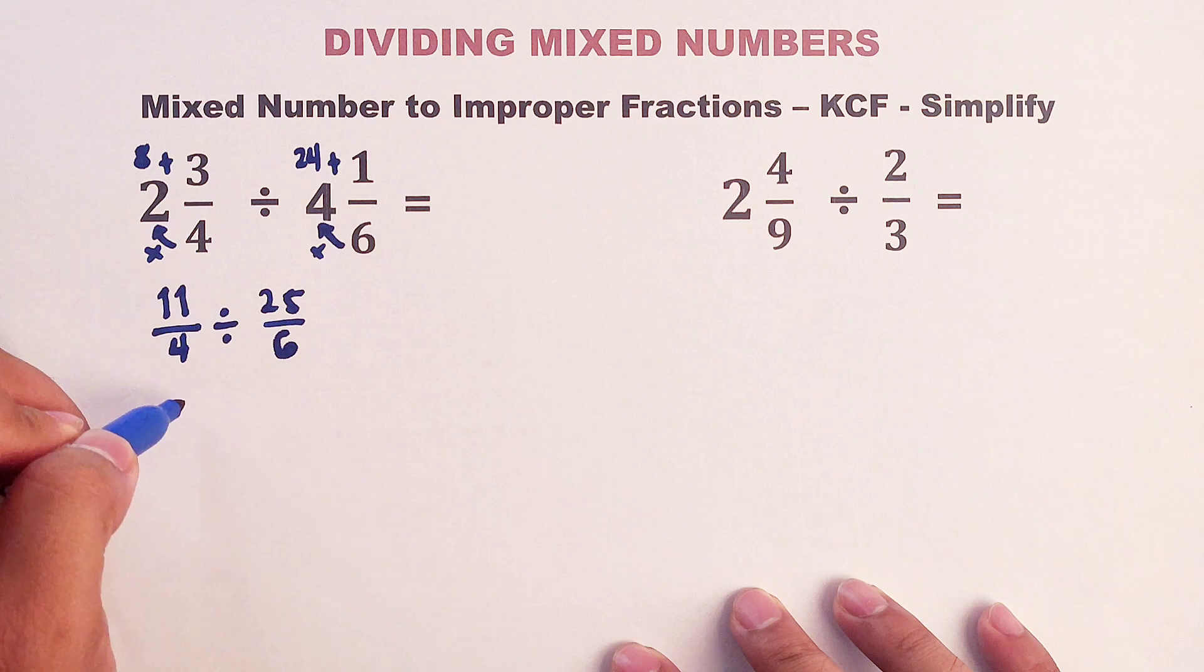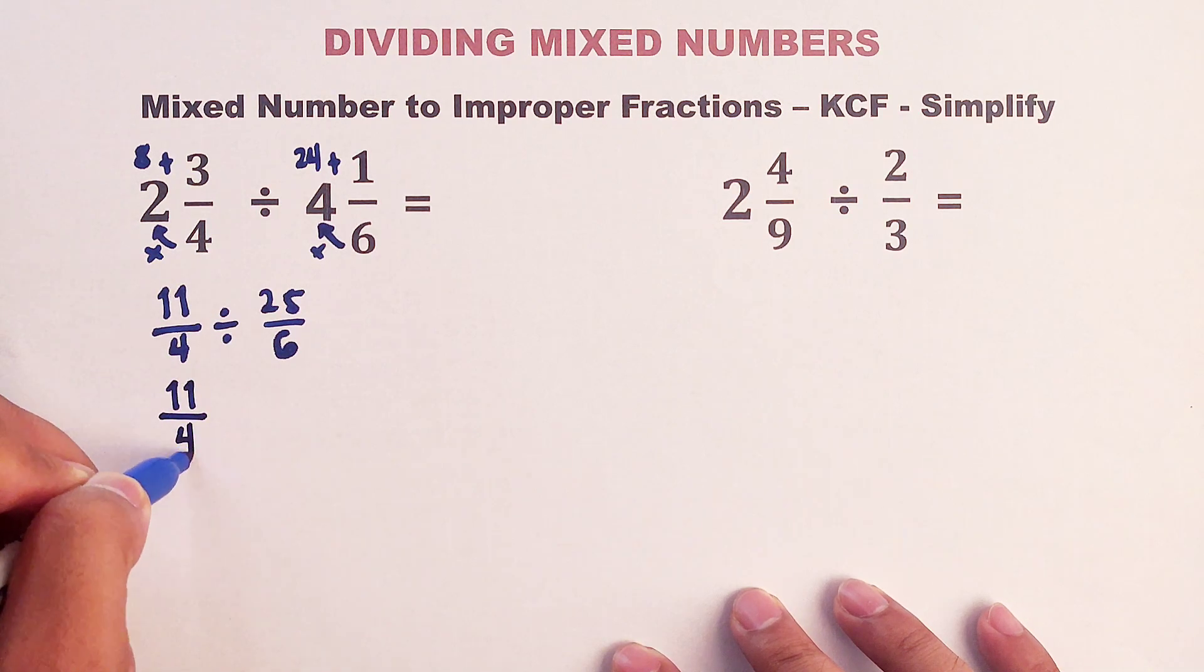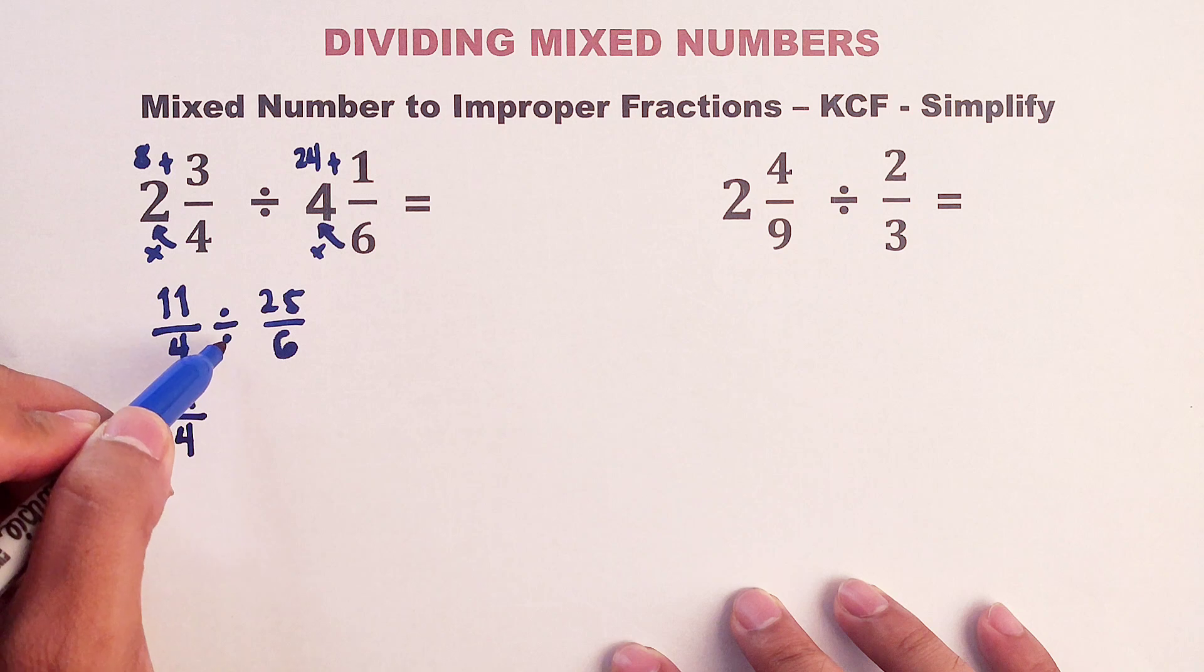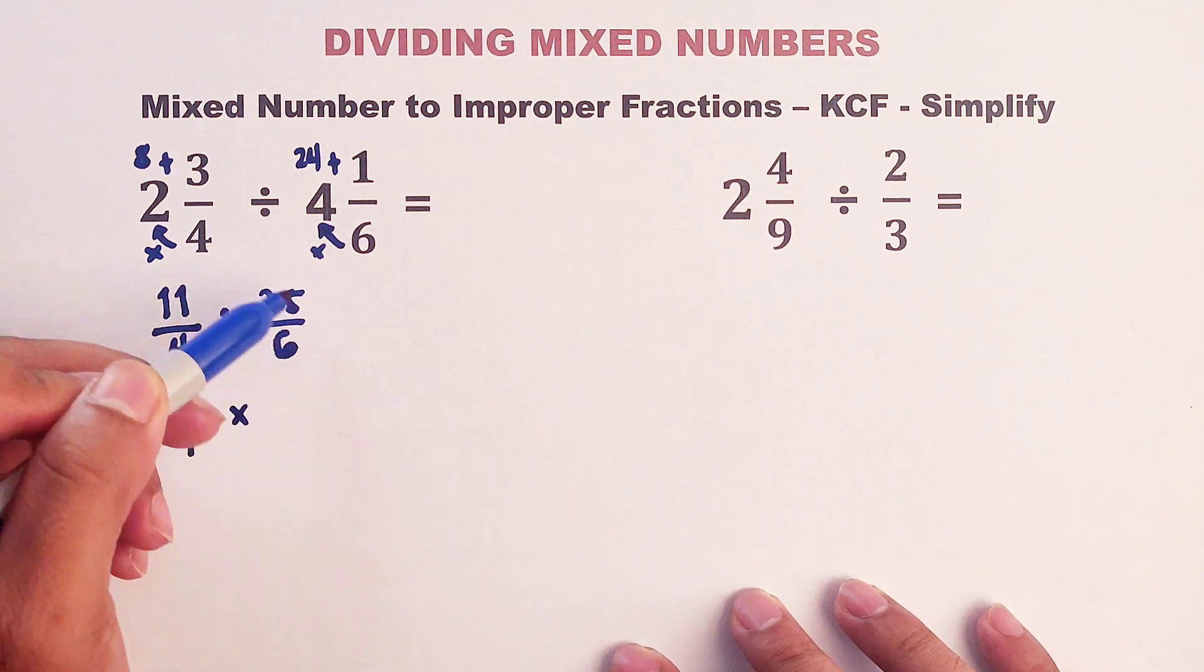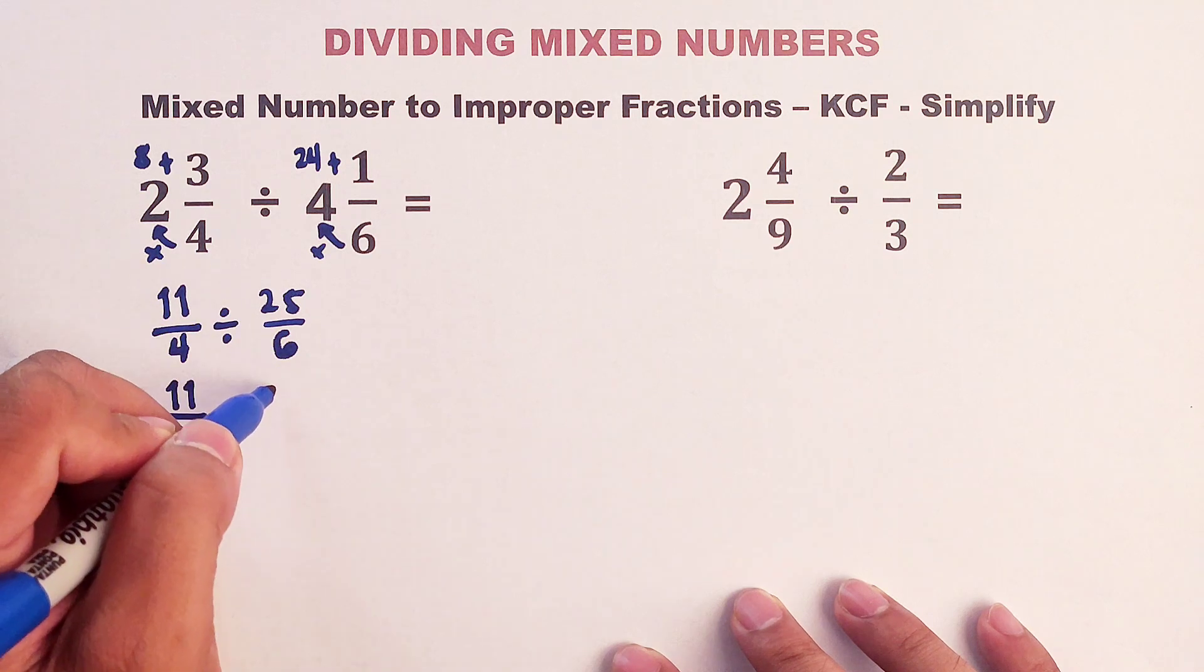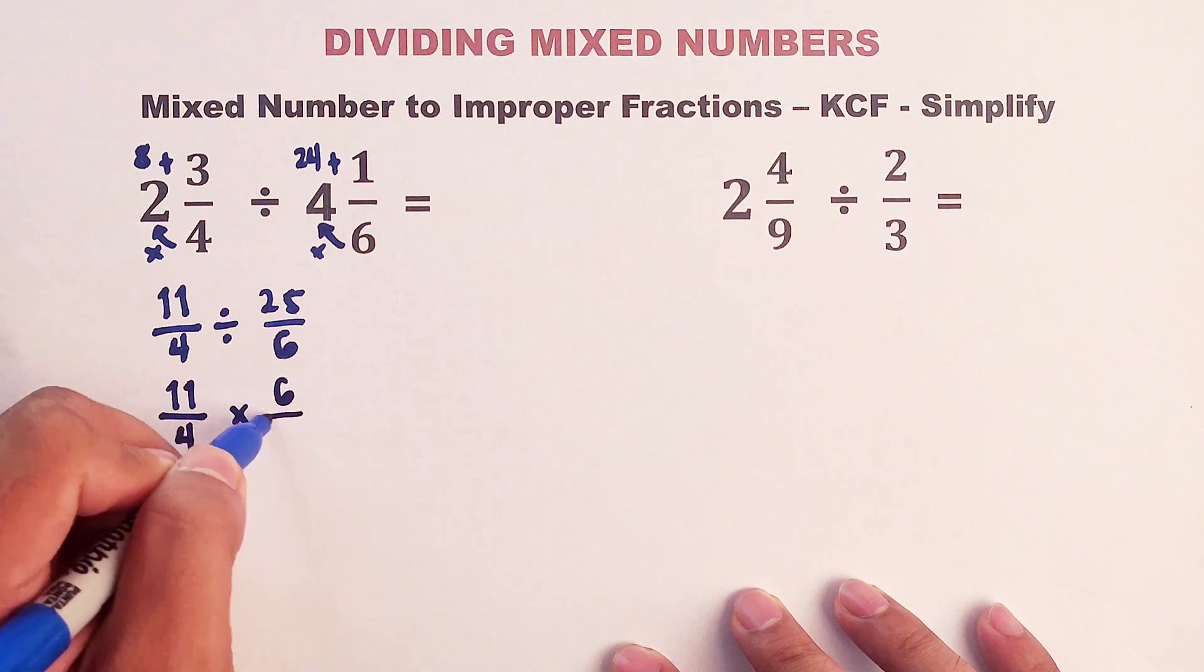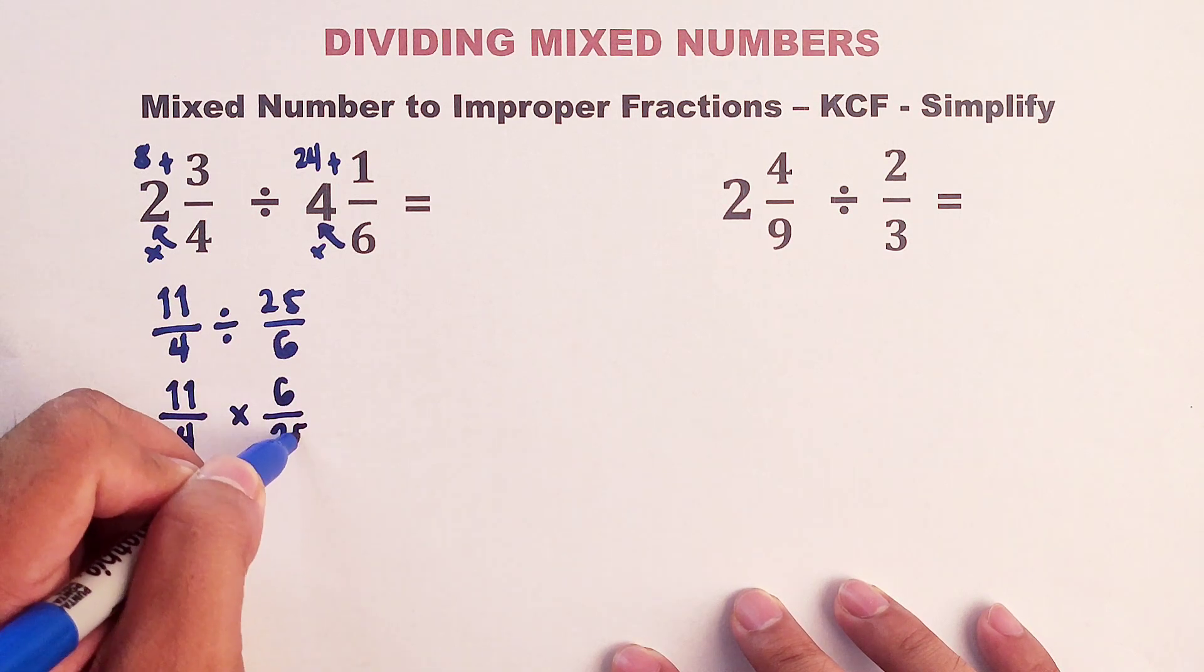So we will keep or copy the first fraction. Then we will change this division symbol to multiplication symbol. We will flip the second fraction. That would be 6 over 25.